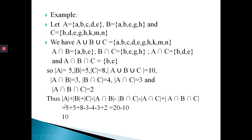Now, putting all values into the theorem: the cardinality of A is 5, B is 5, C is 8, minus A intersect B which is 3, minus B intersect C which is 4, minus A intersect C which is 3, plus A intersect B intersect C which is 2. So we get 5 plus 5 plus 8 minus 3 minus 4 minus 3 plus 2 equals 10. This is our right-hand side, and the left-hand side value is also 10. So left-hand side equals right-hand side, and our theorem is verified.